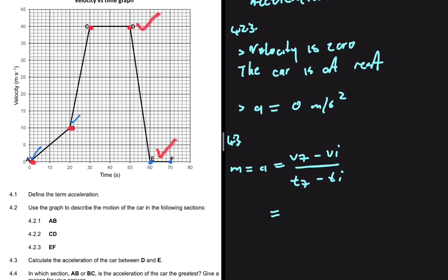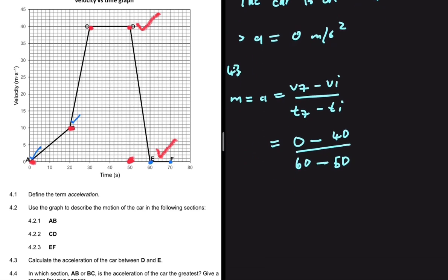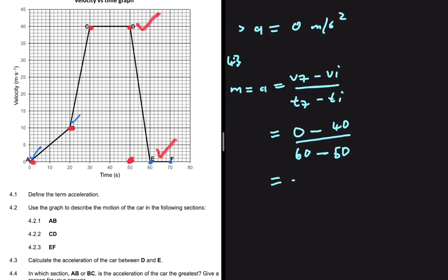Our Y-axis is velocity and our X-axis is time. The final velocity at E is 0, minus the initial velocity at D which is 40 meters per second, all divided by the time at E (60 seconds) minus the time at D (50 seconds). That gives us minus 4. The negative sign indicates direction, so the acceleration is 4 meters per second squared in the opposite direction.